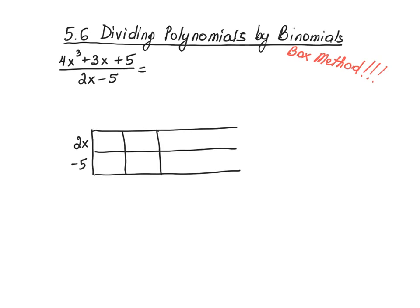Let's take a look at another example of dividing a polynomial by binomial using the box method. As you can see I already started setting up my box. It has two rows because my divisor has two terms.